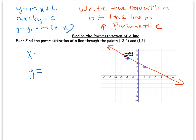To get from the point negative two, four to one, two — the spider's x-coordinate changes by three. So the x-coordinate changes three units.